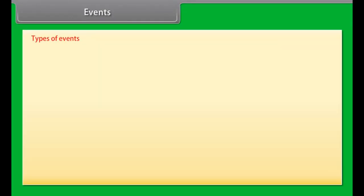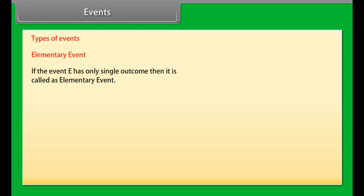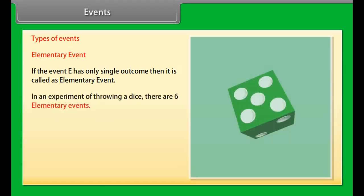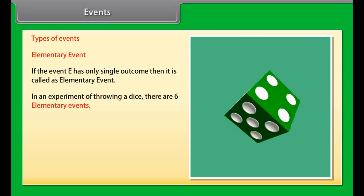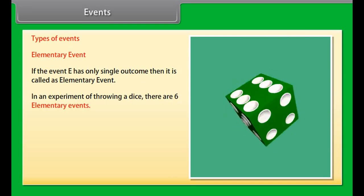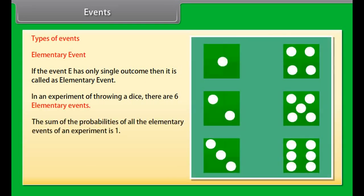Types of Events. Elementary event: if the event E has only a single outcome, then it is called an elementary event. In an experiment of throwing a dice, there are 6 elementary events. The sum of the probabilities of all the elementary events of an experiment is 1.